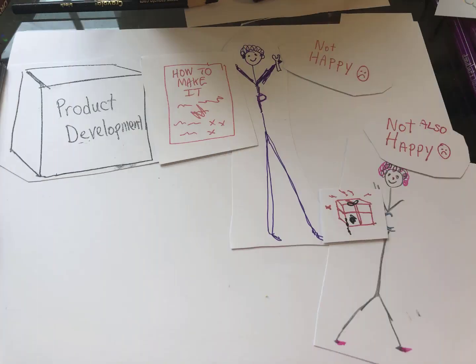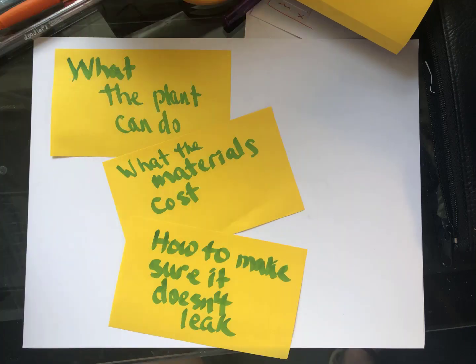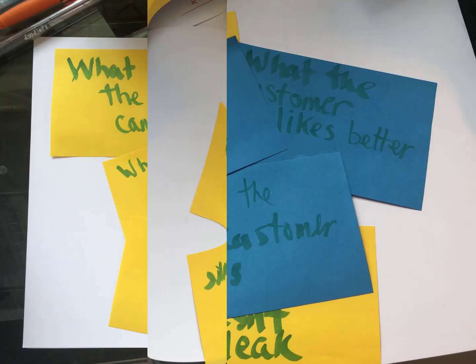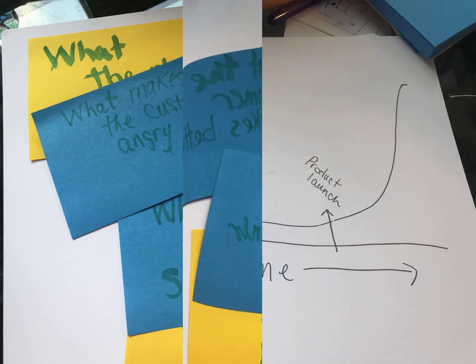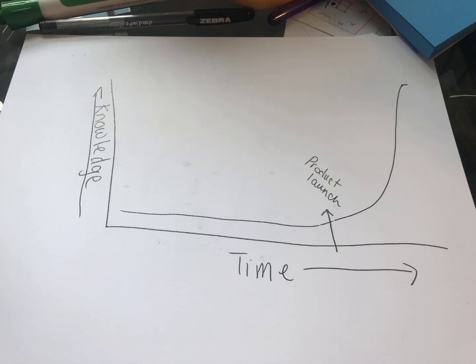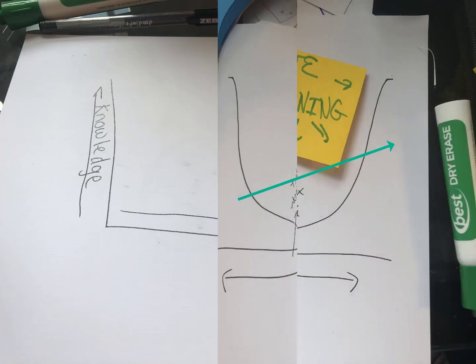The reason that product development delivered a bad process and a bad product was that we didn't have enough knowledge. We might not have known enough about what the plant needed or what the customer really wanted. In most product development processes, a lot of learning happens after the product is launched — it's in the customer's hands and the plant is trying to make it.